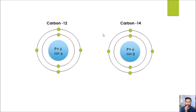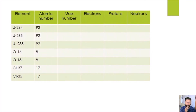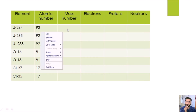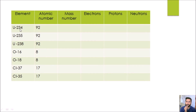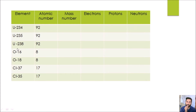Carbon-13 also exists, but it is very unstable, and that is why we do not mention it here. We have isotopes of uranium: uranium-234, uranium-235, and uranium-238 — all with atomic number 92. For each isotope, electrons equal the atomic number (92), protons are also 92, and to find neutrons you subtract the atomic number from the mass number. We also have two isotopes of oxygen — oxygen-16 and oxygen-18 — and two isotopes of chlorine — chlorine-35 and chlorine-37. You need to complete the table for all of these.